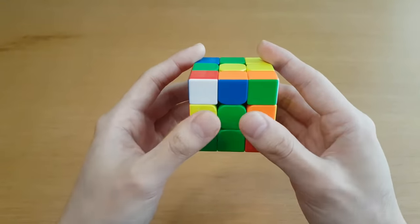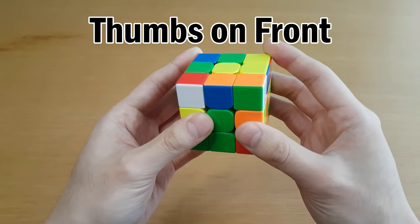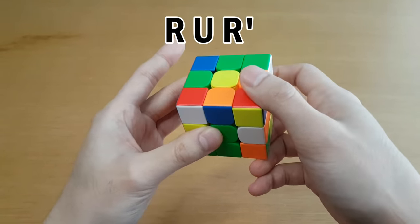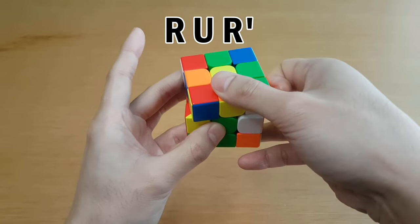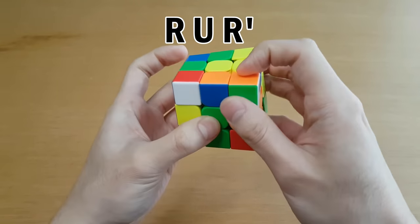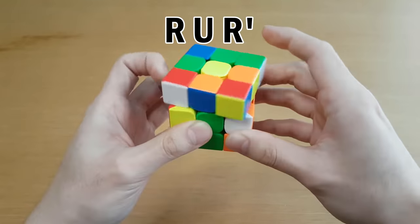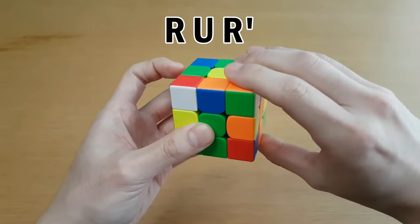So during especially F2L, you want your thumbs to be on the front and you start and end your algorithms like this. After you do an R move, if you have to do U, you either pinch turn like this or do a left U turn like this. Both are less comfortable than probably what you've learned at the start, which is like that, but they are much faster because you do not have to do that re-grip.